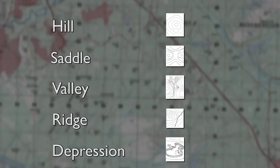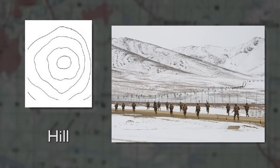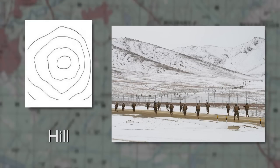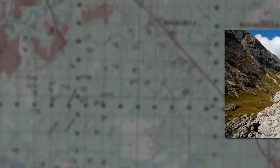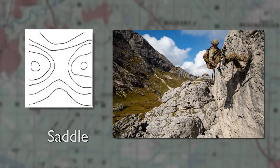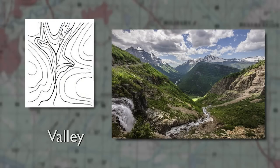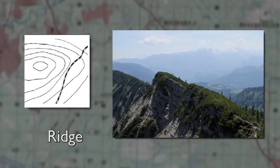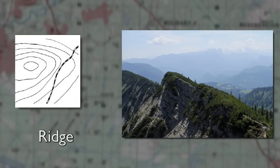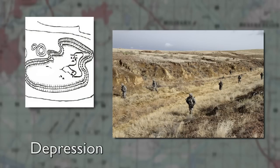There are five major terrain features on a military map: a hill, a saddle, a valley, a ridge, and a depression.